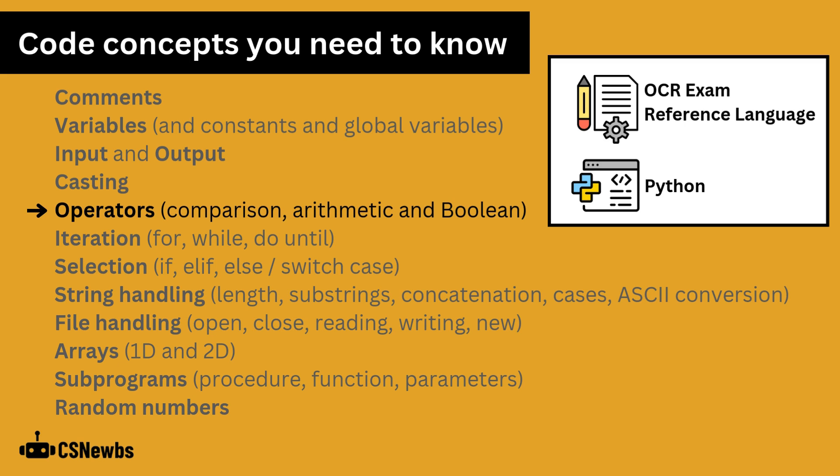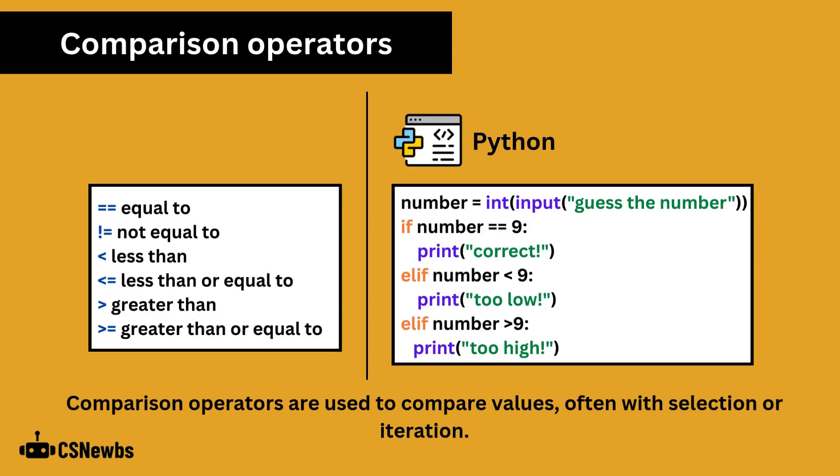There are three categories of operators that you need to be able to understand in OCR, ERL and code in a programming language like Python or Java. Comparison operators are used to compare values, often with selection or iteration.